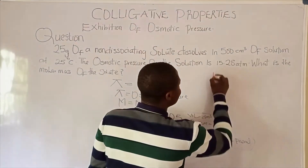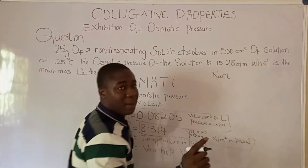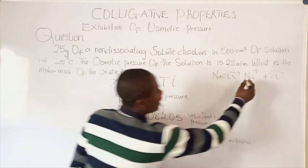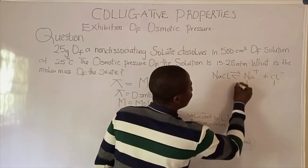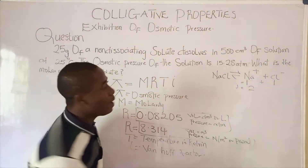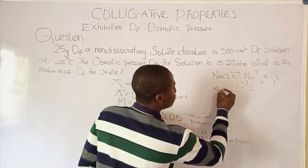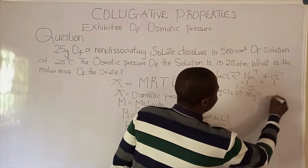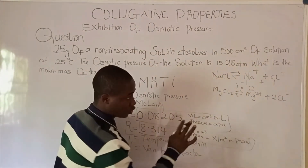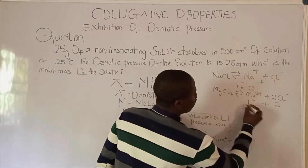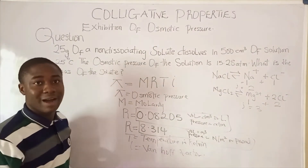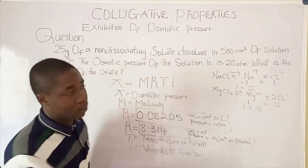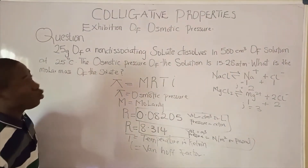If the compound is like Sodium Chloride (NaCl), when we dissociate it, we get 2 ions: Na⁺ plus Cl⁻. So the Van't Hoff Factor becomes 2. For a compound like MgCl₂, when we dissociate it, we get Mg²⁺ plus 2Cl⁻ — that is 1 mole and 2 moles, giving a Van't Hoff Factor of 3. The Van't Hoff Factor is simply the number of moles of ions produced when the compound dissociates.